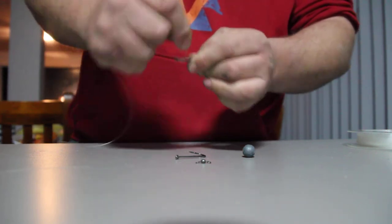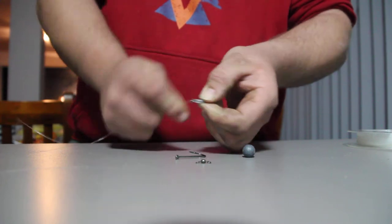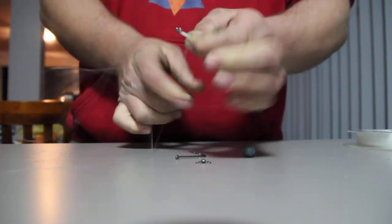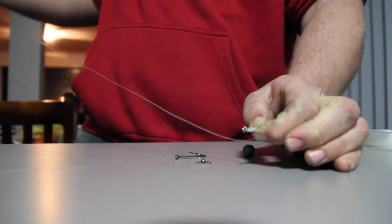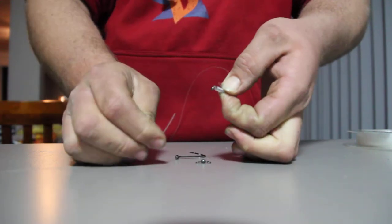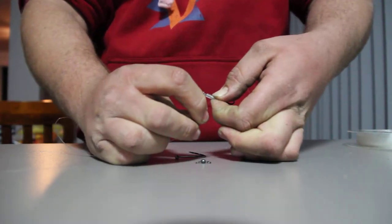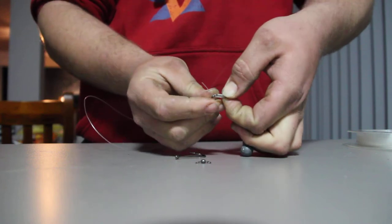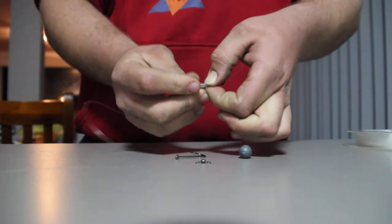With 80lb, about 6-8 times is more than enough. As you can see, grab the end of your trace line and pass it back through the eye from underneath. It's important you go underneath, otherwise it won't sit straight.